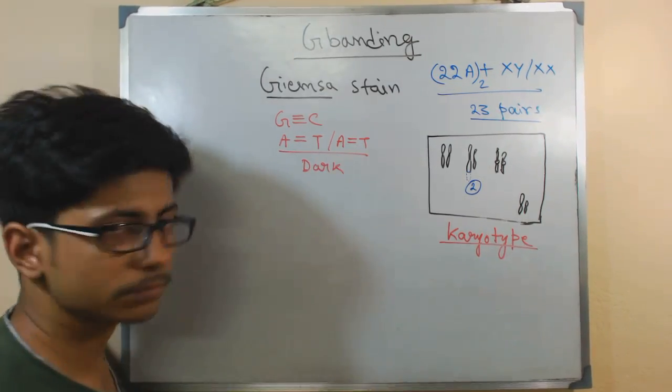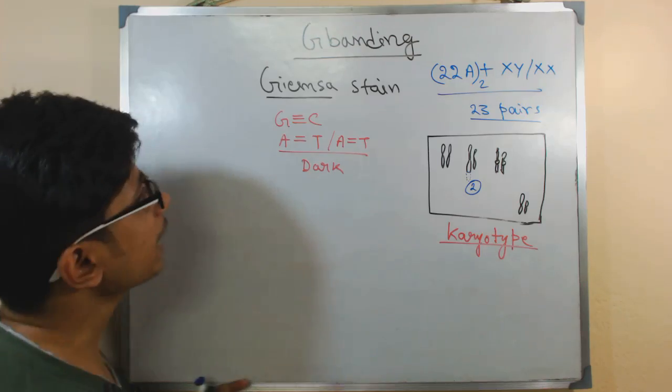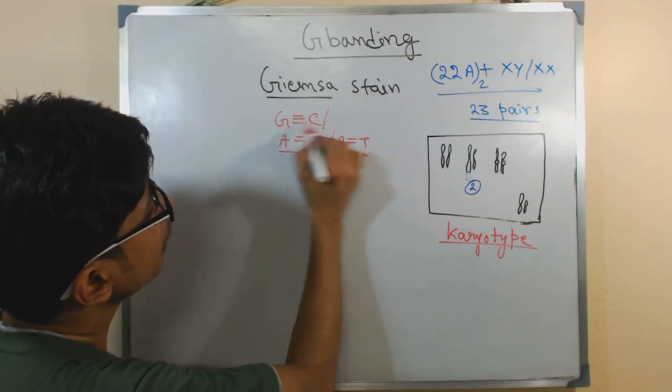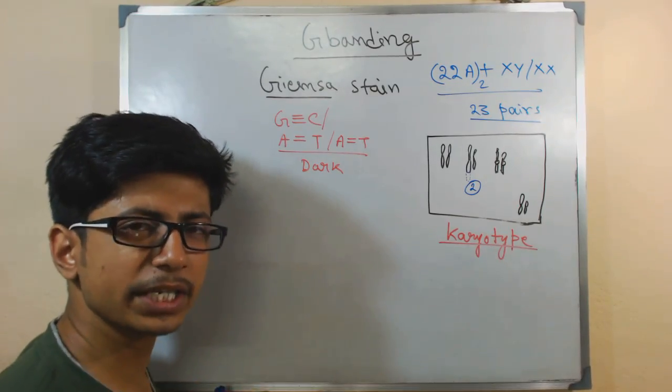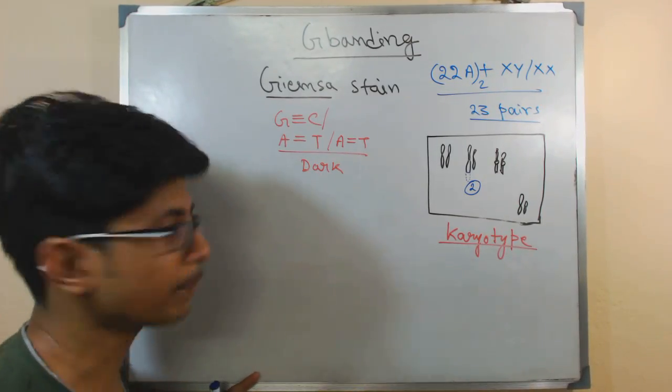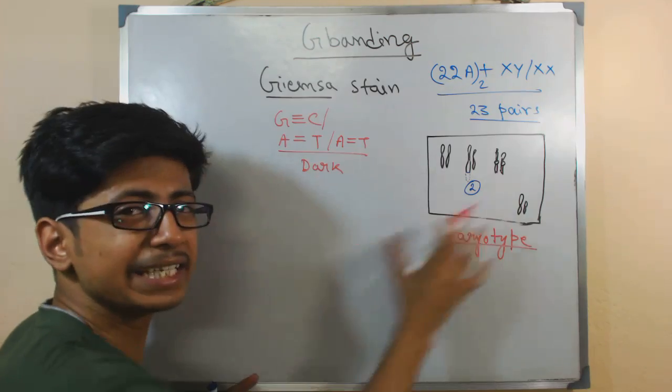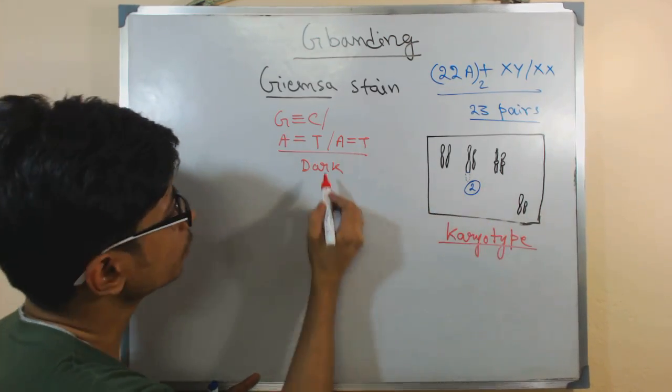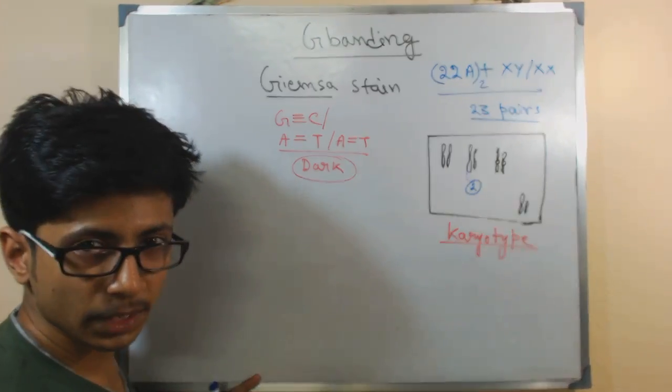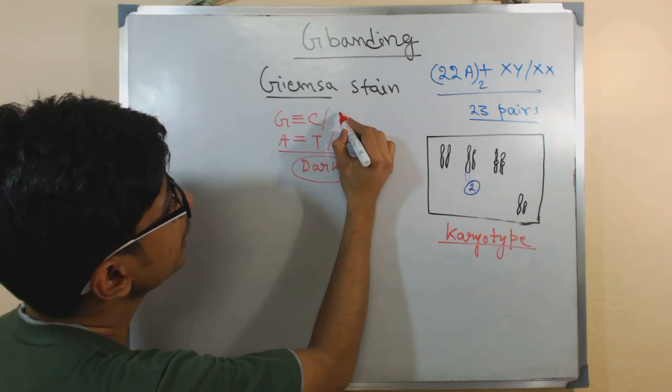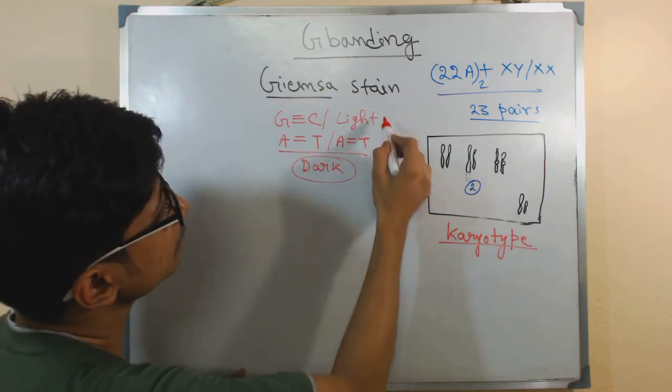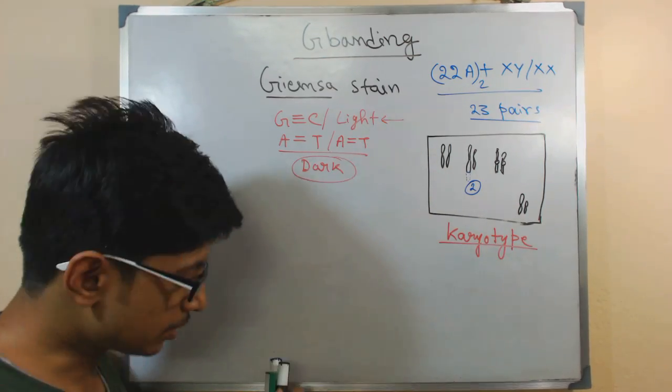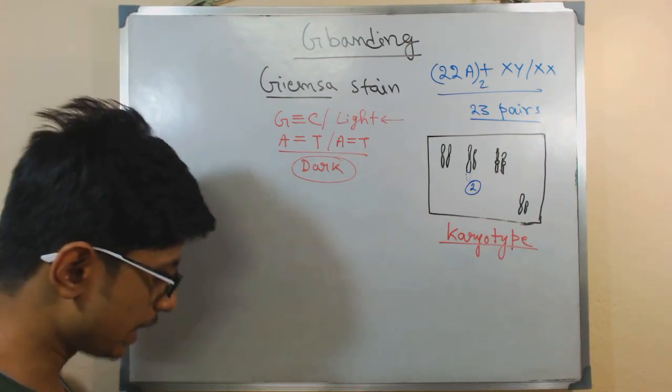Normally this Giemsa stain tends to stick more with the AT and gives the first dark coloration. And if it is staining and attached to GC, very less—the affinity for this Giemsa stain to attach with the AT-rich segment. So if there is any AT-rich segment in the chromosome it will be much more darker. If it is GC-rich it will be less darker, it will be lighter. Okay, so these are the two things.